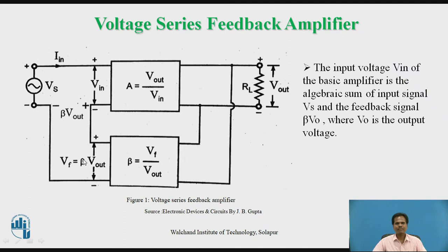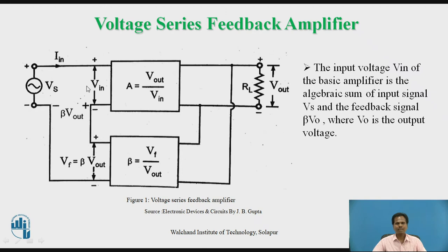The feedback voltage signal is applied in series opposition with the input voltage signal, so both VS and VF are of opposite polarity. The feedback voltage signal opposes the input voltage signal at the input side of the amplifier. Due to this, the effective input current of this amplifier decreases, so the input impedance of this voltage series feedback amplifier increases.